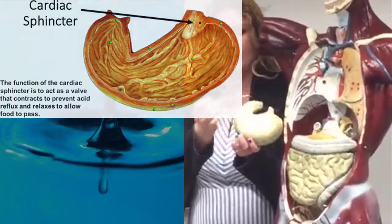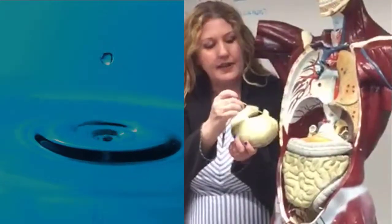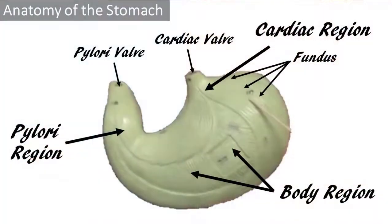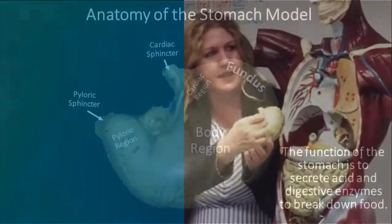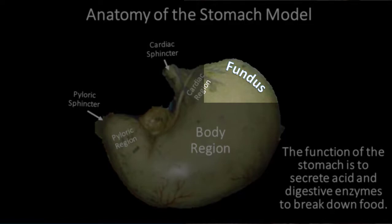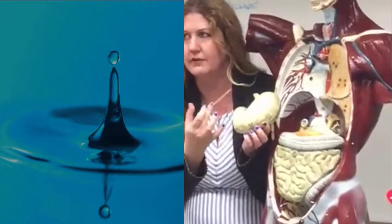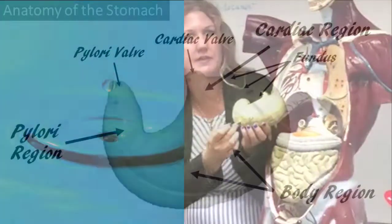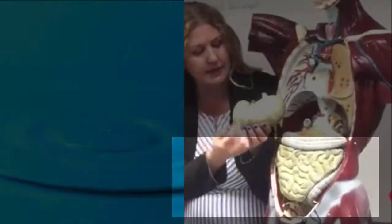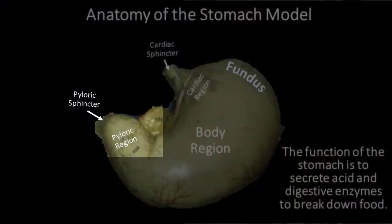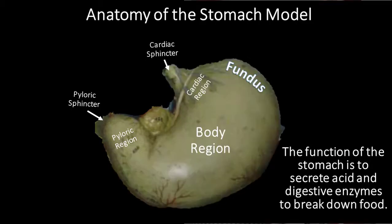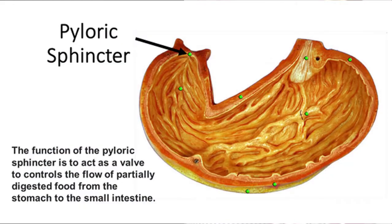So the cardiac sphincter — it enters here, and the area right around there is called the cardiac region. This arch here just to the side is the fundus. The large section — the bulk of the stomach — is the body region. And as we progress over this way, you'll see it kind of funnel in; this becomes the pyloric region, which ends at the pyloric sphincter.